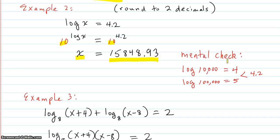And a mental check is log base 10 of 10,000 is 4, because 10 to the 4th is 10,000. And log base 10 of 100,000 is 5, because 10 to the 5th is 100,000. And we want it to be 4.2. 4.2 is in between those. And our 15,000 is in between these two numbers. So it's plausible. The answer is reasonable.